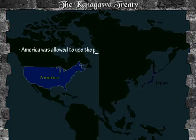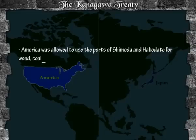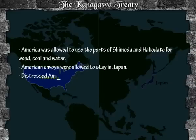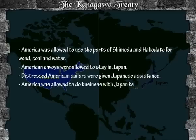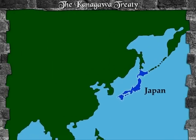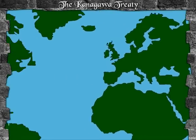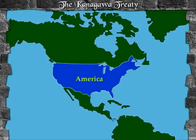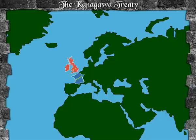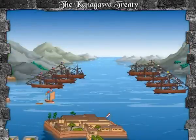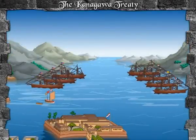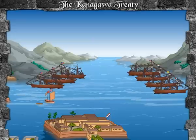The Kanagawa Treaty was a compromise serving the interests of both countries. America was allowed to use the ports of Shimoda and Hakodate for wood, coal, and water. American envoys were allowed to stay in Japan. Distressed American sailors were given Japanese assistance. America was allowed to do business with Japan, keeping in mind local rules and regulations. Japan reluctantly stepped out to meet the world after long years of seclusion. America's bold initiative prompted other nations like France, England, Holland, and Russia to also seek concessions in Japan. Japan agreed and granted business concessions to them, leading to economic exploitation by the foreigners.